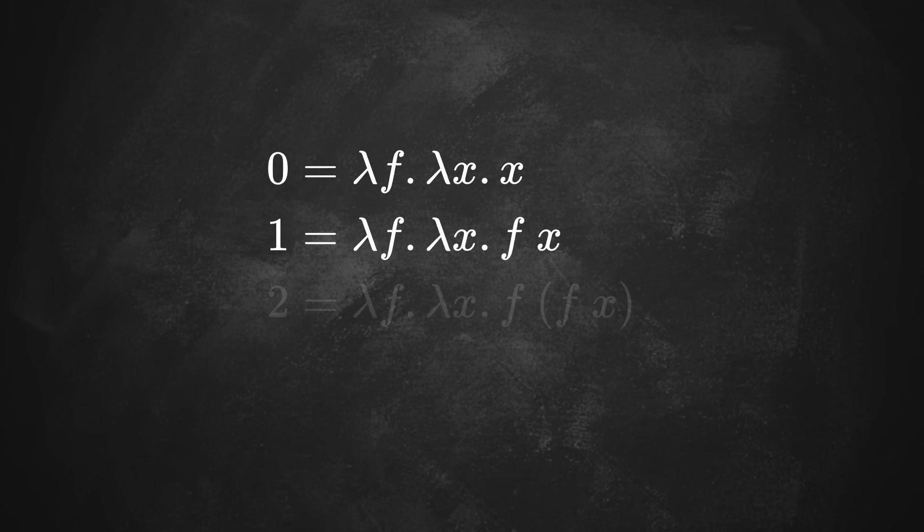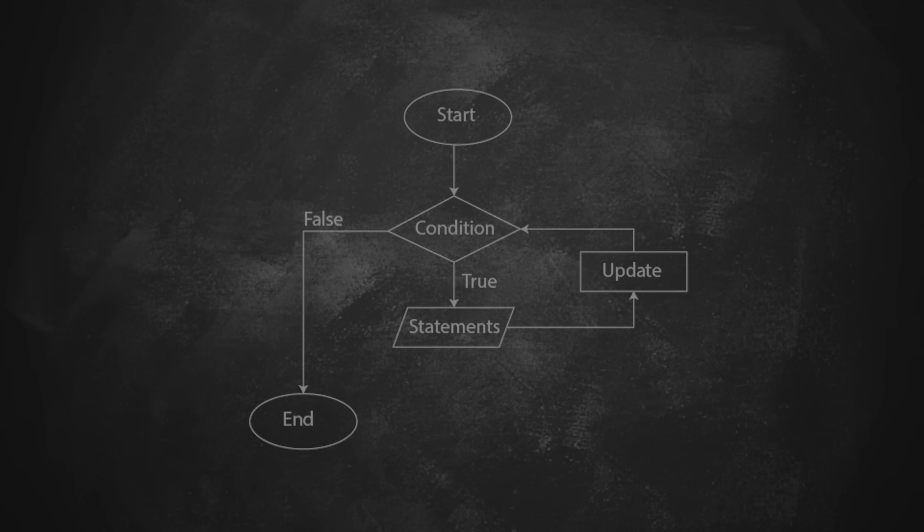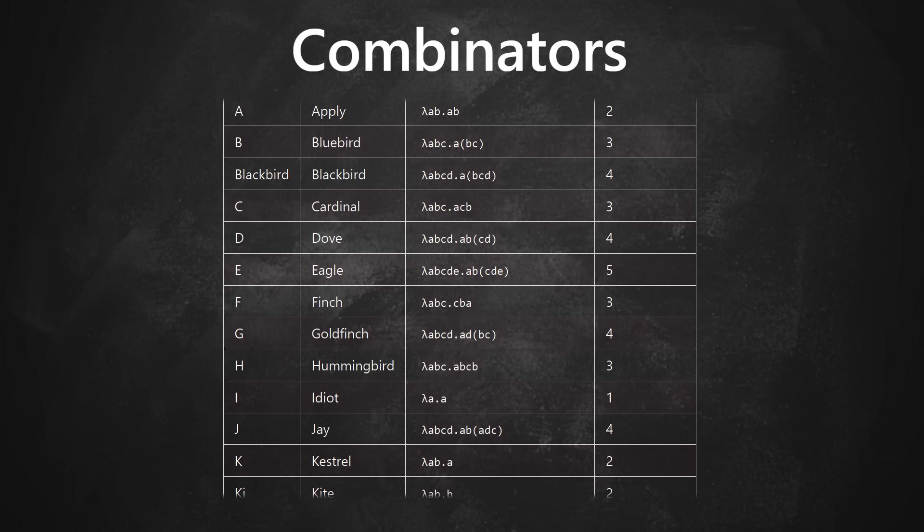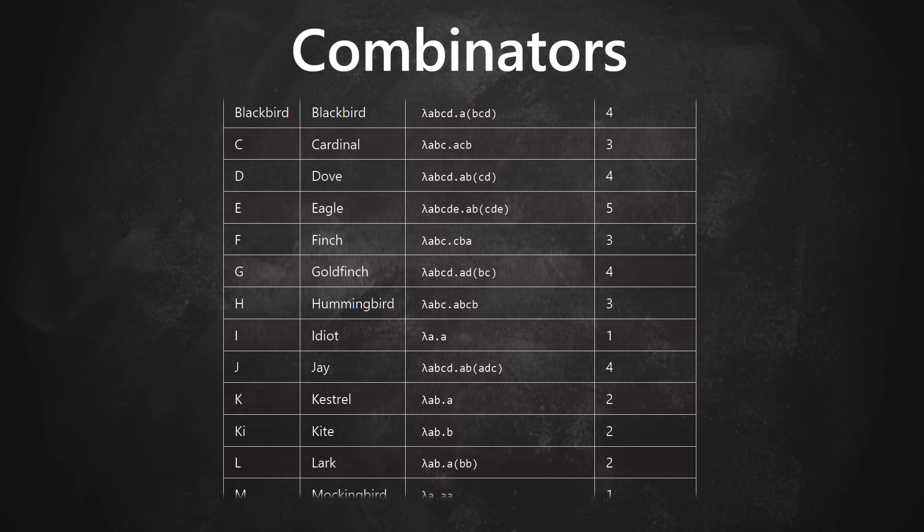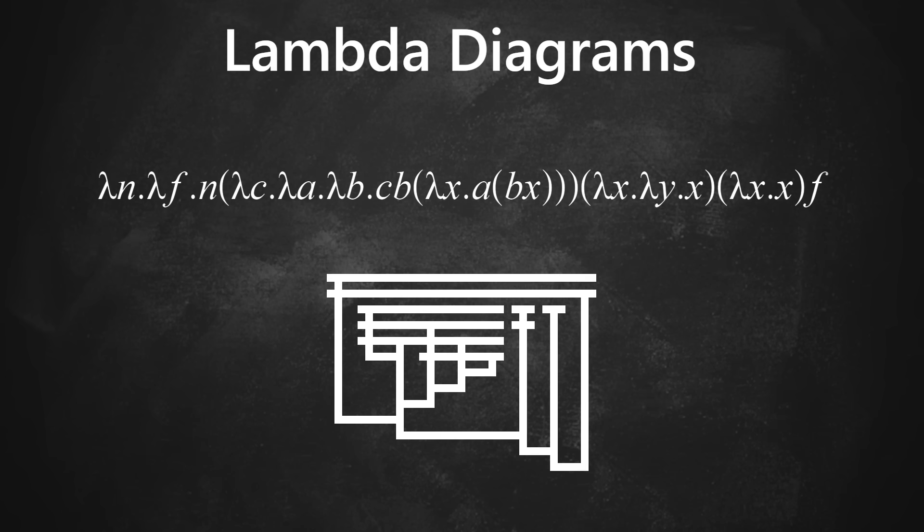The most common way in lambda calculus is with something called church numerals. In that system, the number of times you apply a function represents the number. So not applying f at all is 0, applying f one time is 1, applying it twice is 2, and so on. To make loops and conditionals, you can use certain lambda expressions called combinators. In fact, there's a whole alphabet of combinators, from a to omega, for all sorts of things you'd expect in a programming language. It can often be hard to follow what these lambda expressions do, but one cool way to help visualize them is with these lambda diagrams, invented by John Tromp. It's a really nice way to directly turn linear code into 2D images, and there's just something very satisfying about it.